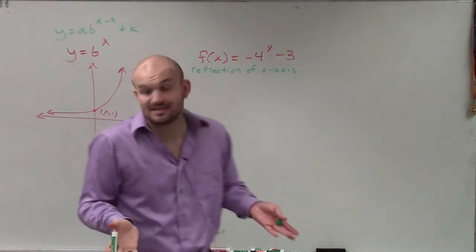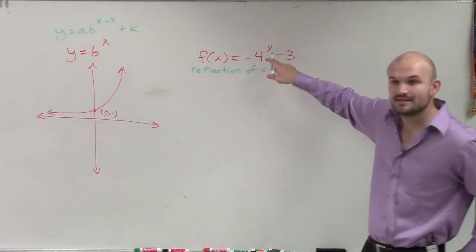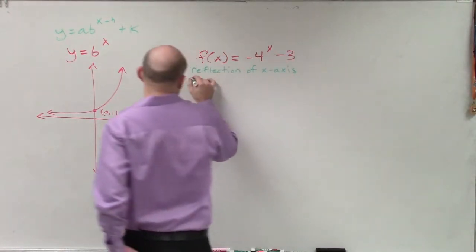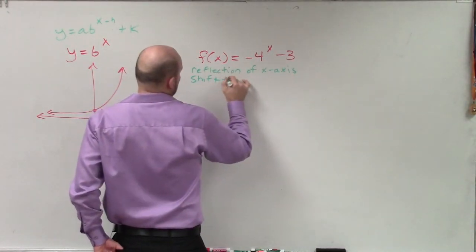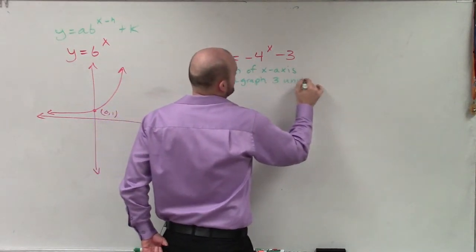Right? That negative a, just like a quadratic, is going to tell you the graph is going to be reflected over the x-axis. Then this minus 3 is your minus k. That's going to tell you to shift the graph three units down.